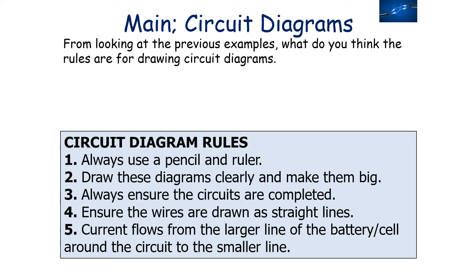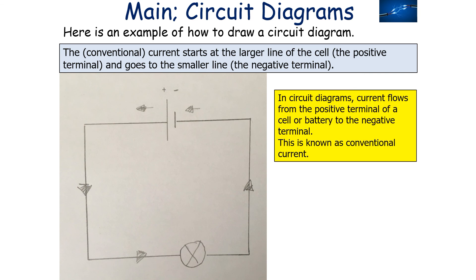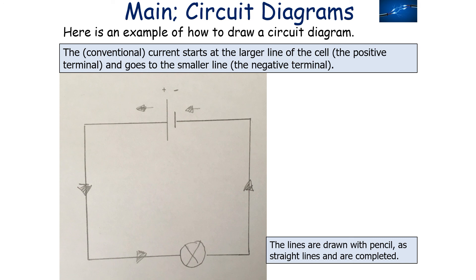When drawing circuit diagrams, always use a pencil and a ruler, draw clearly and make the diagram big. Always ensure circuits are complete — a circuit only works if it forms an entire loop. Draw wires as straight lines. Conventional current always flows from the larger line of the battery or cell (the positive terminal) around the circuit to the smaller line (the negative terminal). Ensure lines are straight, drawn in pencil, and the circuit is complete.